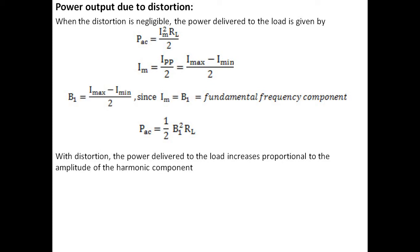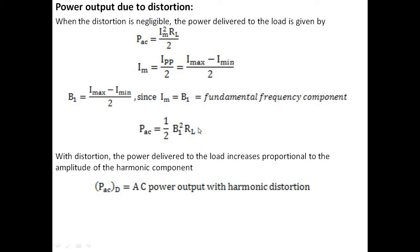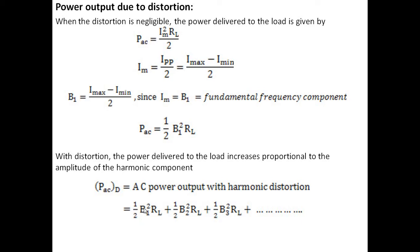As distortion increases, the power delivered across the load also increases, based on the total harmonic components. The AC power output without harmonic distortion is PS = (1/2)·B1²·RL. The AC power delivered with distortion, represented as PS with suffix D, is: (1/2)·B1²·RL + (1/2)·B2²·RL + (1/2)·B3²·RL and so on. This is the total AC output power across the load due to the fundamental and all harmonic components.